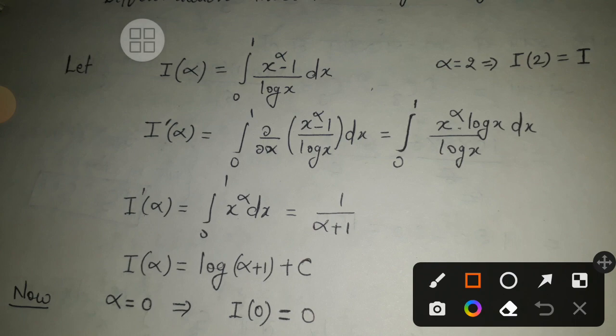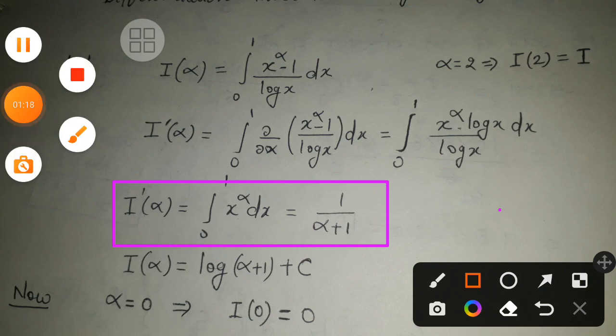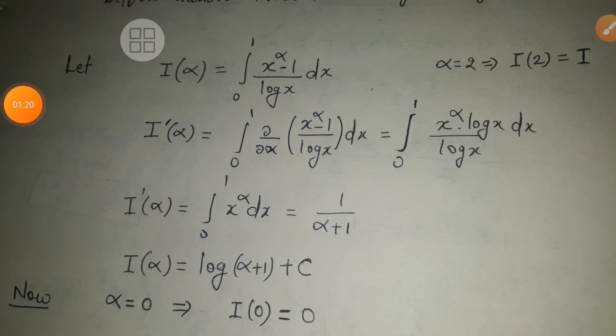This is easy integration. Its integral equals 1/(α+1). Now we reverse calculus - we integrate both sides. I(α) equals log(α+1) plus C.